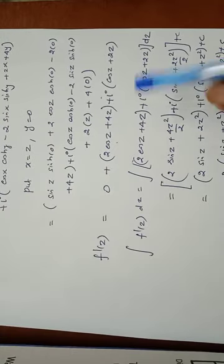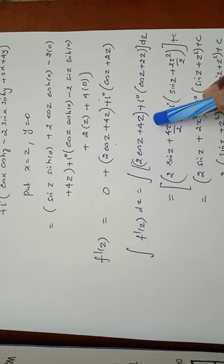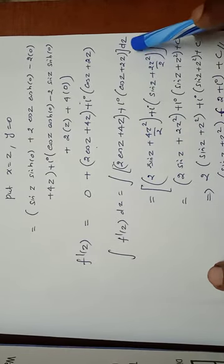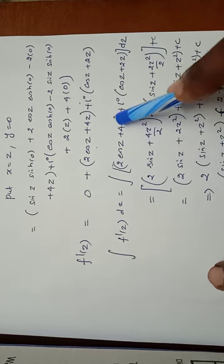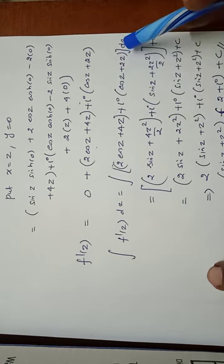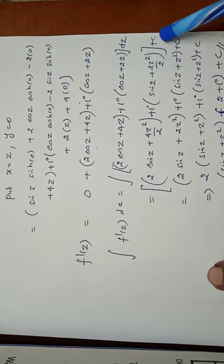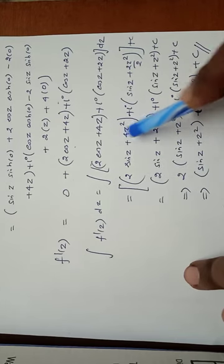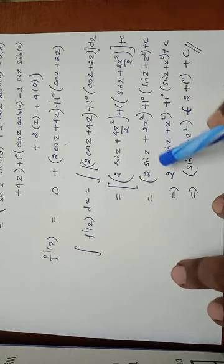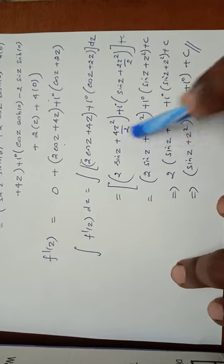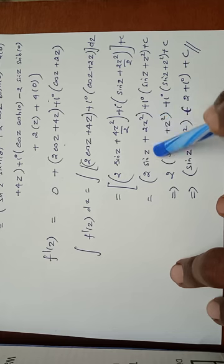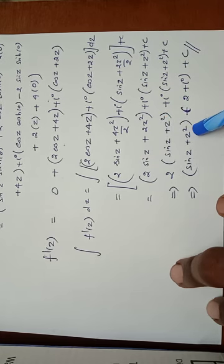Integrating both sides: f(z) equals integral of (2 cos z plus 4z plus i(cos z plus 2z)) dz. Integration of 2 cos z is 2 sin z; integration of 4z is 4·z²/2 equals 2z²; i into integration of cos z is sin z; integration of 2z is 2·z²/2 equals z². So f(z) equals 2 sin z plus 2z² plus i(sin z plus z²) plus c, which simplifies to (2 plus i)(sin z plus z²) plus c.